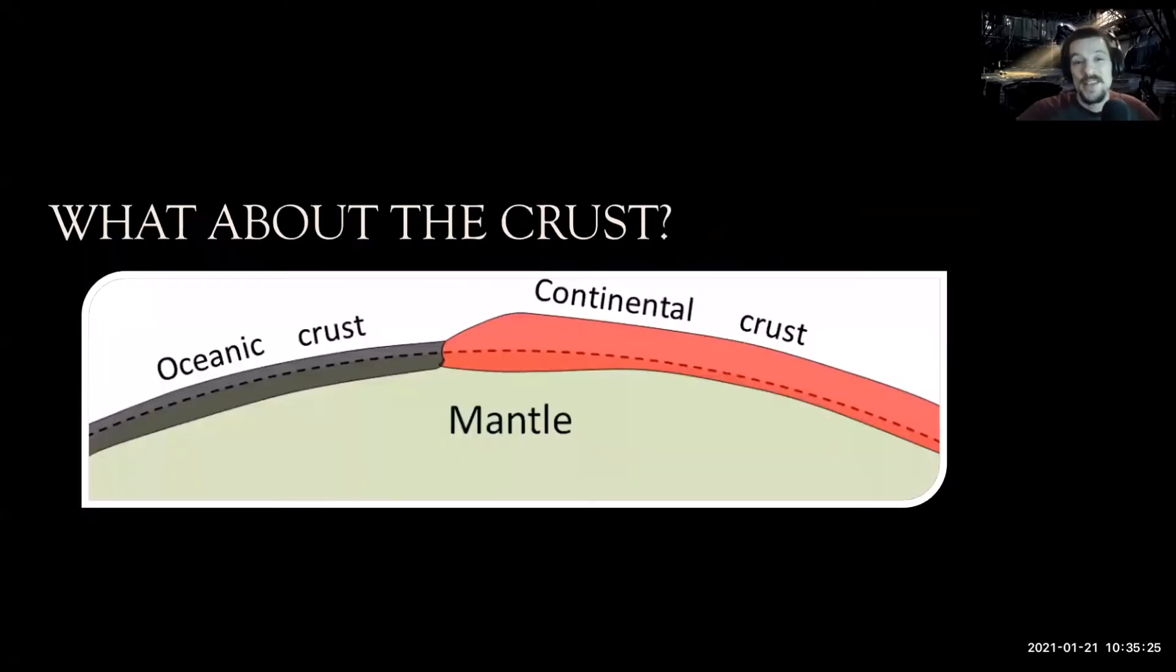What about crust? Can we use density to help us determine differences in crust? Oceanic crust is thin, continental crust is thick. Oceanic crust, however, is more dense, whereas continental crust is less dense. So when these two collide, oceanic crust is going to be the type of crust that subducts and goes below continental crust.